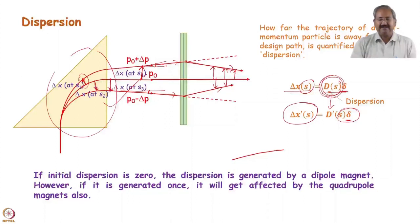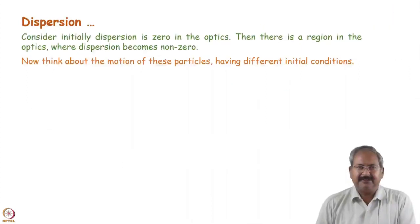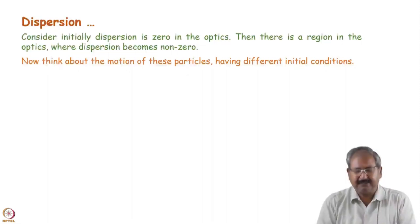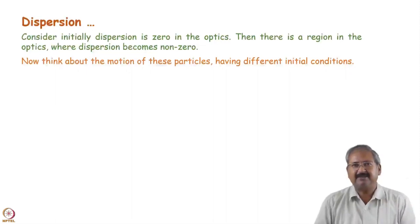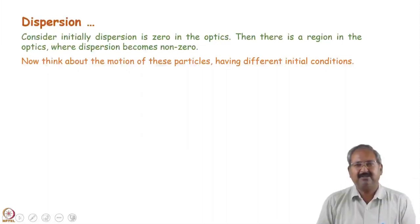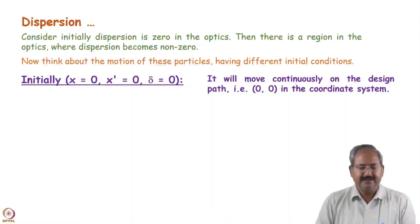Consider initially dispersion is zero in the optics. Zero dispersion means all particles — whether having momentum p₀, p₁, or p₂ — have their centroids on the design trajectory. We say dispersion is zero when all particles are exhibiting betatron oscillations around the same orbit, meaning the orbit is not differentiated according to momentum.